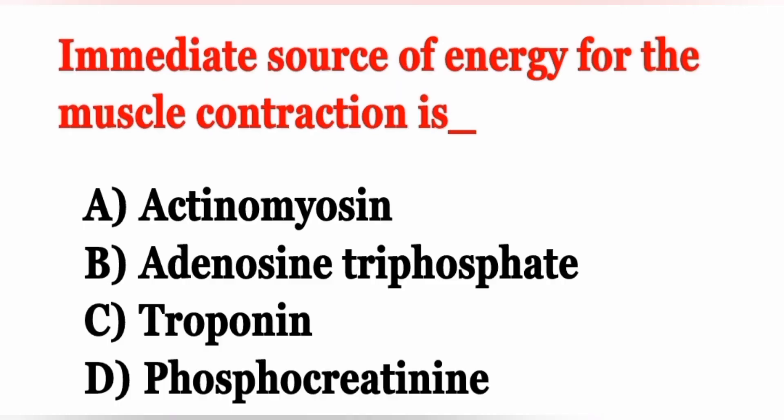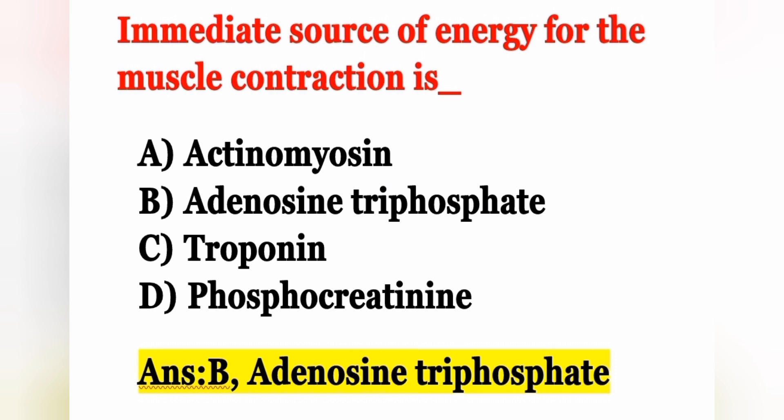Next question (2016 ESIC exam): The immediate source of energy for muscle contraction is — Option A: actinomyosin, Option B: adenosine triphosphate, Option C: troponin, Option D: phosphocreatinine. The correct answer is Option B, adenosine triphosphate (ATP). These are all previous ESIC exam questions. More ESIC questions will be covered in continuous videos — stay tuned.